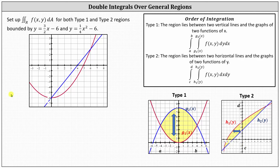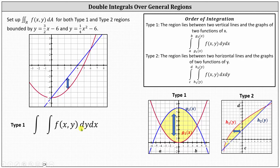Let's begin by setting up the type 1 double integral for the region R. This indicates the order of integration is first with respect to y, then with respect to x — we integrate vertically first and then horizontally. Because we're integrating with respect to y first, the limits of integration for y must be functions of x. The region R is bounded below by the parabola y equals 1/4 x squared minus 6, which is the lower limit, and bounded above by the line y equals 3/2 x minus 6, which is the upper limit of integration.